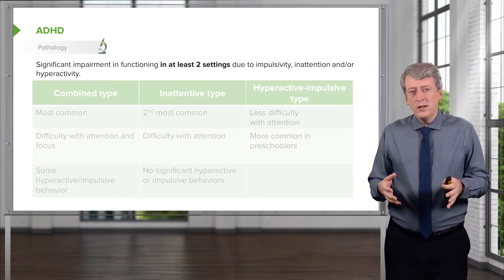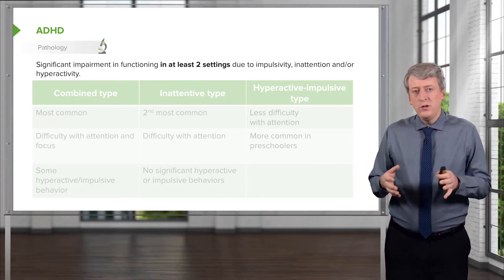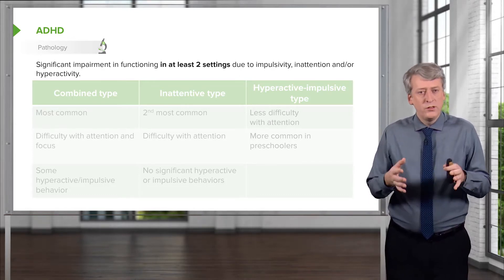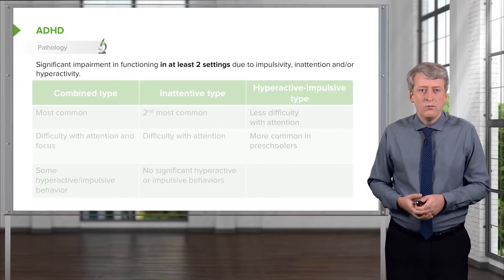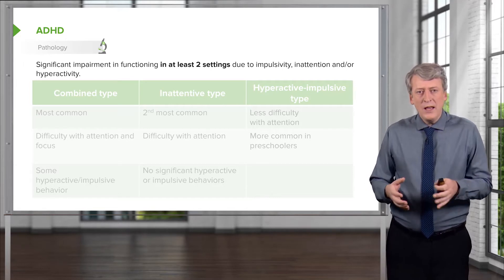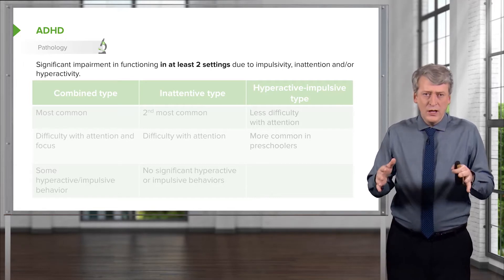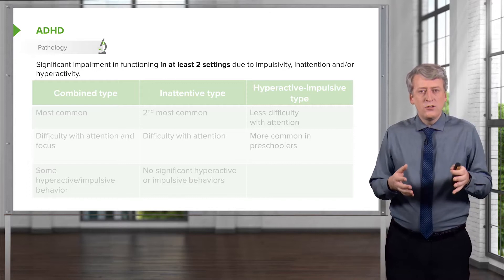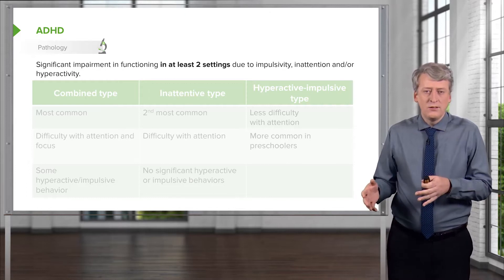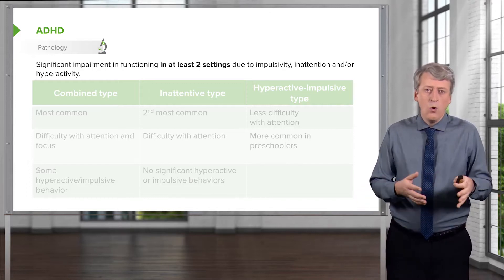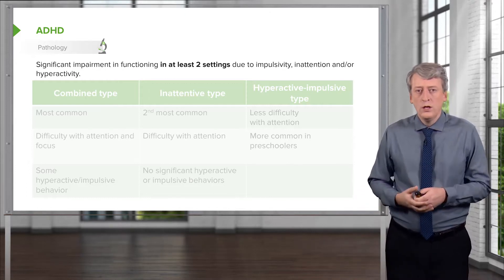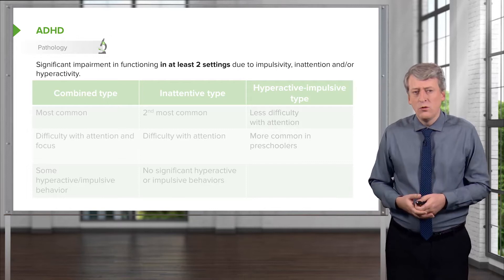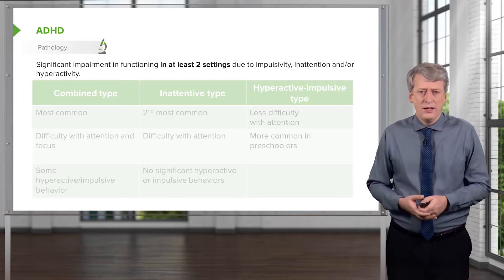There are a few different types of ADHD. In general, ADHD is an impairment in functioning in at least two settings, usually home and school, due to impulsivity, inattention, or hyperactivity.